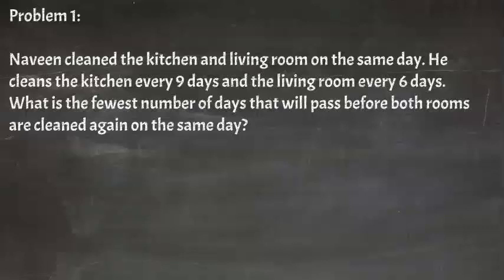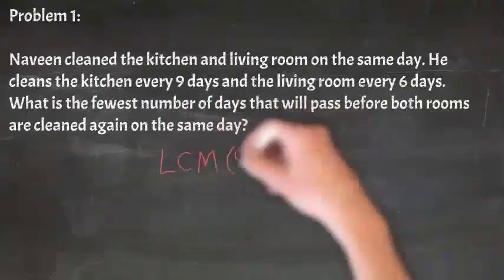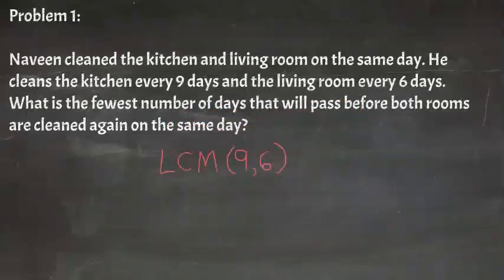In this problem we're trying to figure out when something will happen at the same time again. So we'll need to figure out the least common multiple. Let's find the least common multiple of 9 and 6.